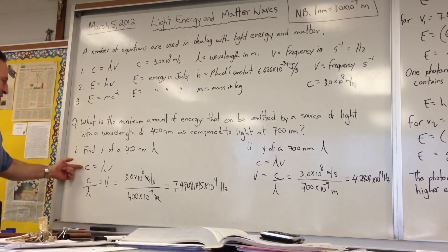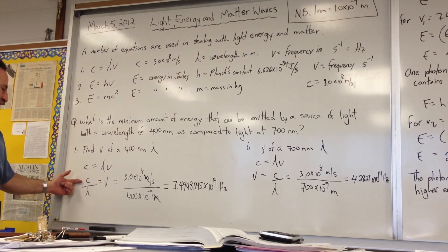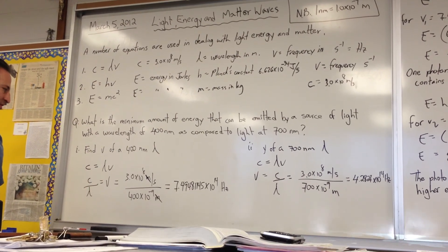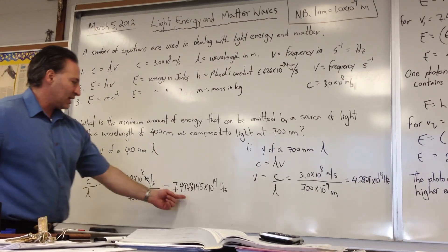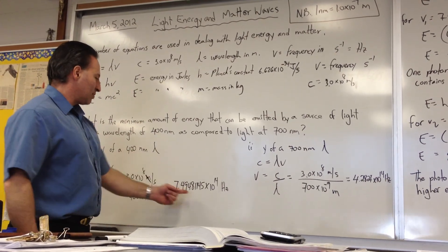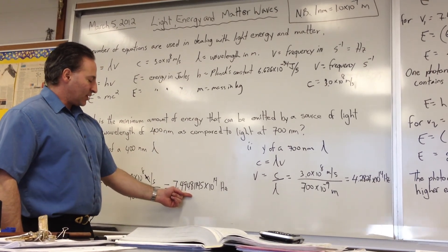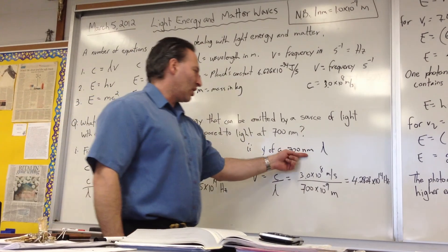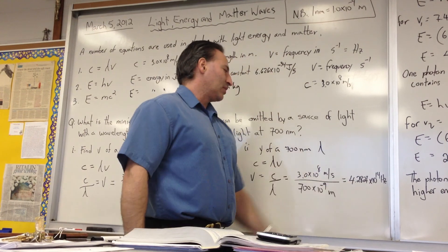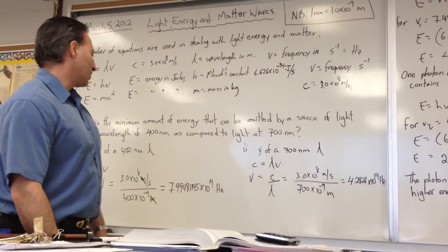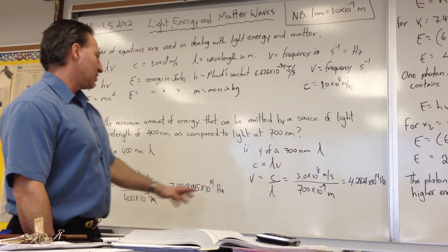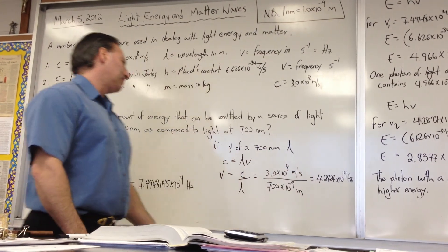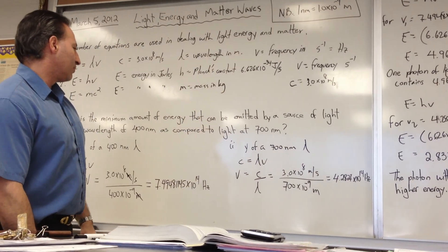In the first step, we use C equals lambda nu and transpose lambda to solve for nu, the frequency of the photon. We find the first photon at 400 nanometers wavelength has a frequency of 7.49 times 10 to the 14 hertz. The second photon at 700 nanometers has a frequency of 4.28 times 10 to the 14 hertz. So the longer wavelength has a lower frequency.